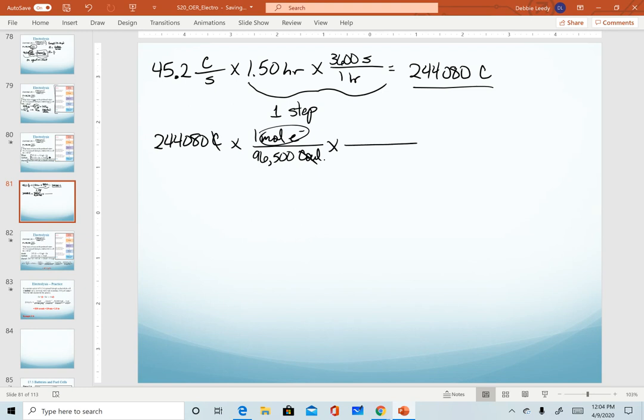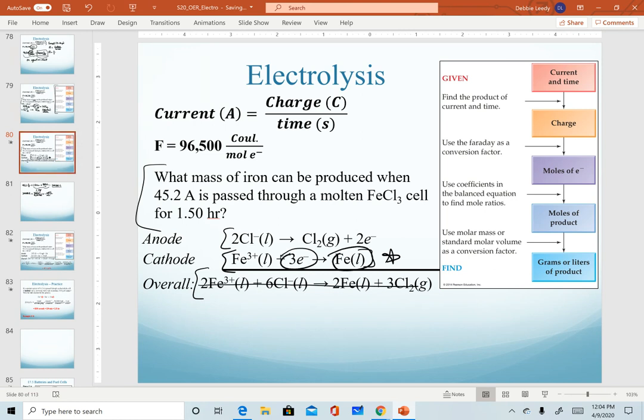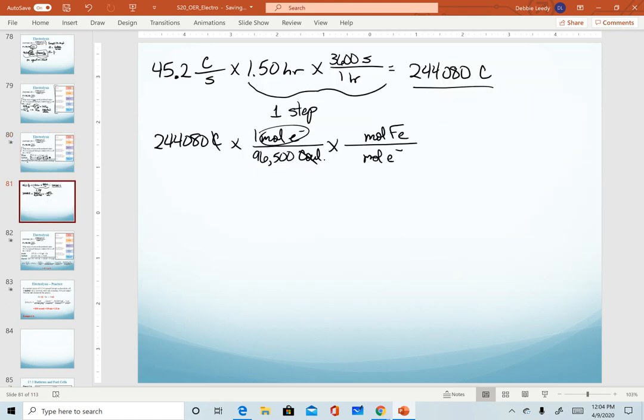And now I'm going to use my stoichiometry to convert my moles of electrons into moles of the iron that I want to solve for. And if you remember from our balanced equation on the previous screen, my moles of electrons to the product moles of iron. So I have a three to one ratio. And then of course, our last step would be to convert our moles of iron into grams, right? We wanted to know mass. And so we look up the molar mass of iron.